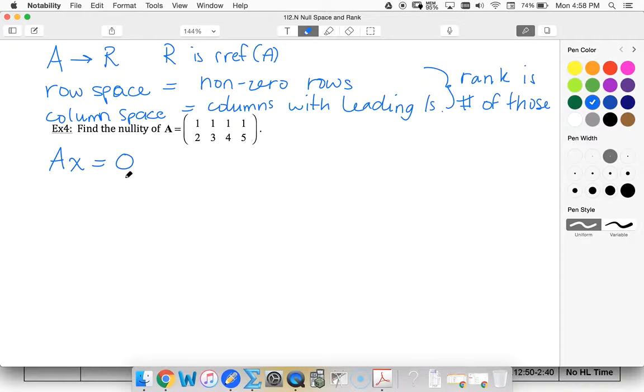So I'm going to set up my homogeneous equation, Ax equals zero, and then to solve that I'm going to make an augmented matrix.